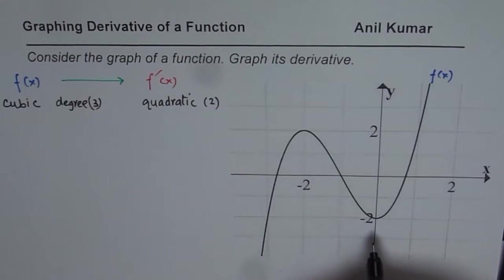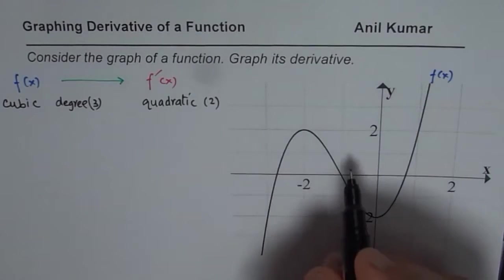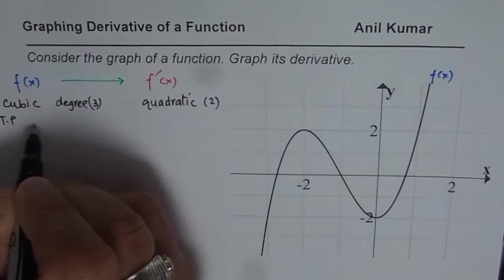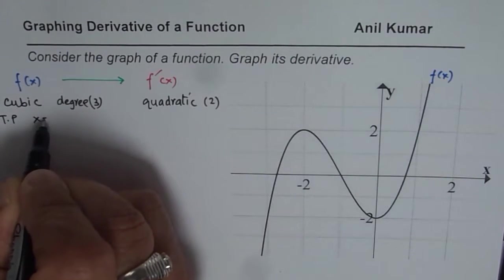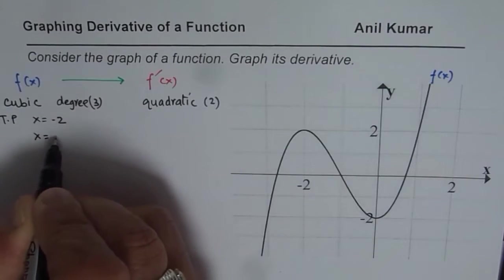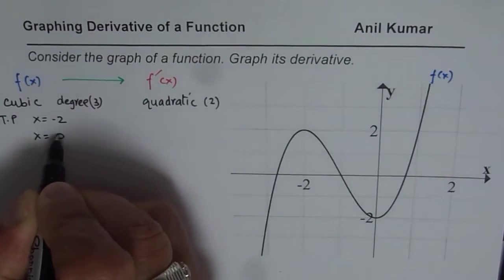Then we have to consider the turning points. So what we have here is turning points are at minus 2. So we are saying turning points. So on the function, we have turning points at x equals to minus 2, and at x equals to 0. So these are the two turning points.